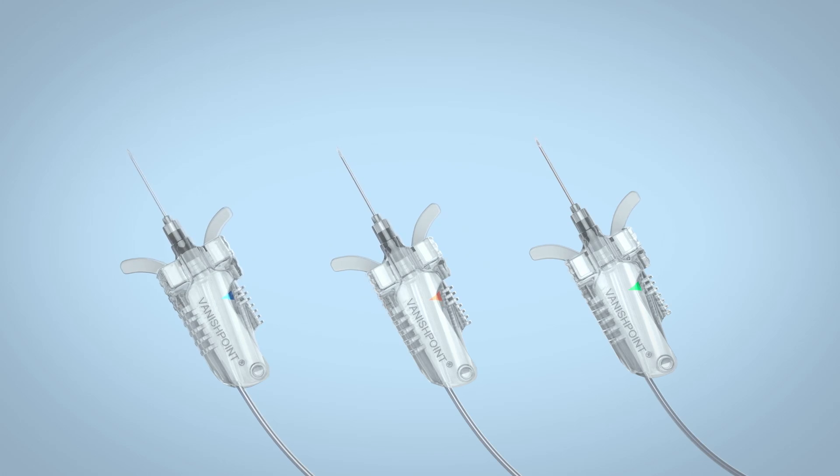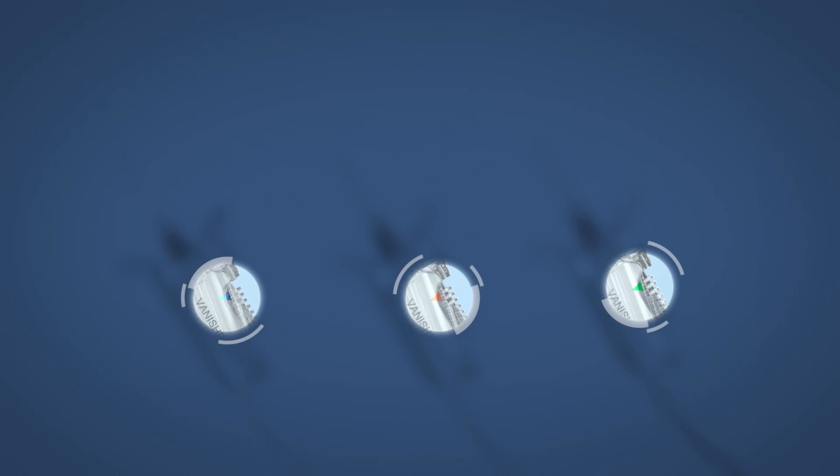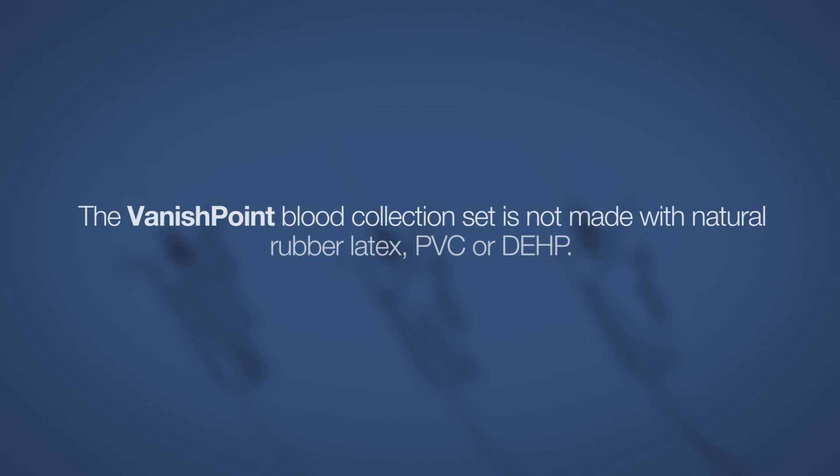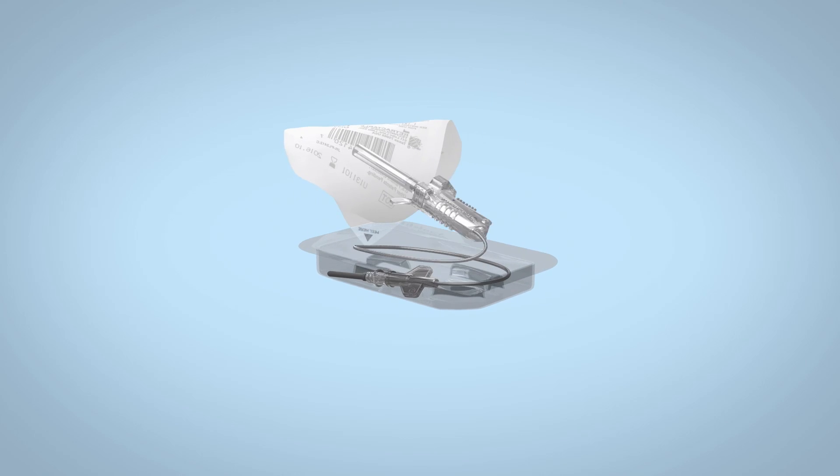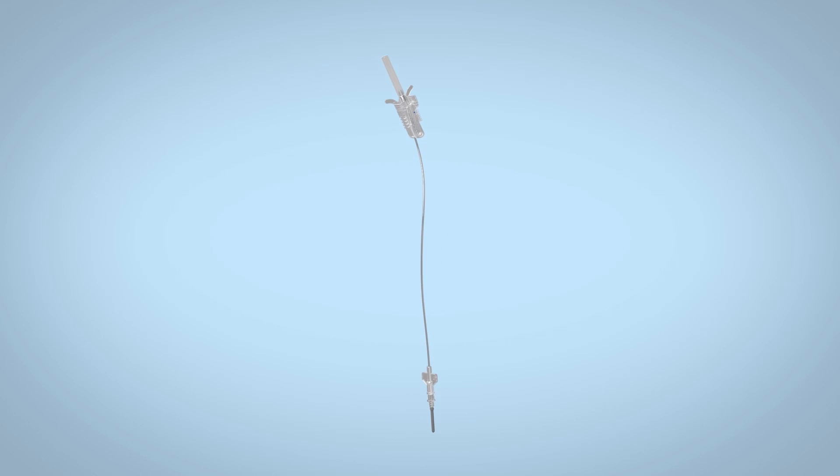The trigger indicator is color-coded for needle gauge. The Vanishpoint Blood Collection Set is not made with natural rubber latex, PVC or DEHP. Kink-resistant tubing is available in 7 and 12 inch lengths.